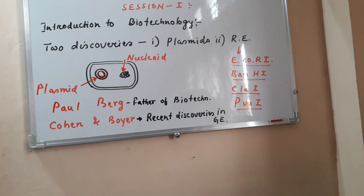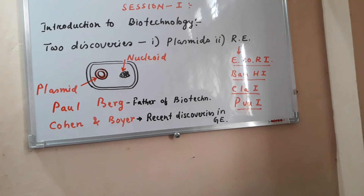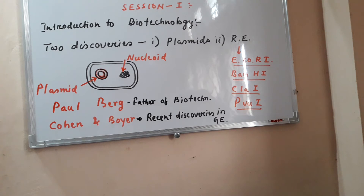If we use fungal DNA extract, we use chitinase. If we use plant DNA extract, we use cellulase, because cellulose is the cell wall component of plant cells. For animal cells, we use lipase and protease to break the cell membrane. Depending on the type of organism used for extracting DNA, the kind of lysing enzyme may vary.